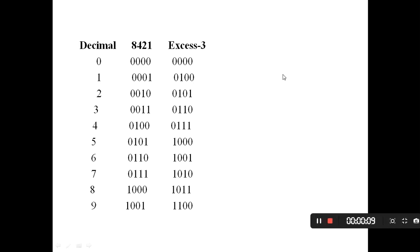Looking at the XS3 table: decimal zero in 8421 is 0000 and in XS3 is 0011. Decimal one is 0001 in 8421 and 0100 in XS3. Decimal two is 0010 in 8421 and 0101 in XS3. Decimal three is 0011 in 8421 and 0110 in XS3. Each XS3 code is obtained by adding binary 0011 to the corresponding 8421 code.